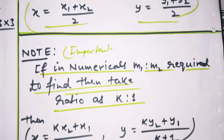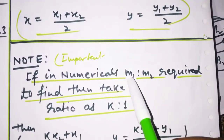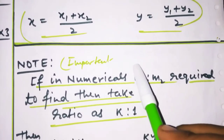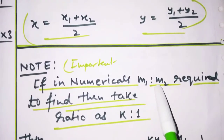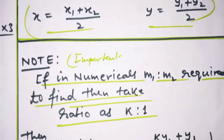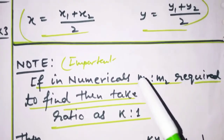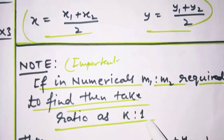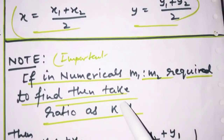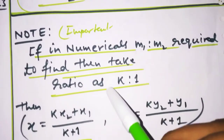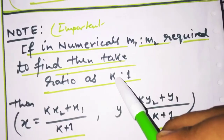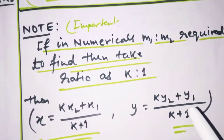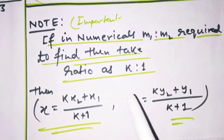Suppose kijiye question mein aapko ratio pata hi nahi hai, ratio nikalna hai. Aise questions jab aapke paas aayenge jisme ratio nikalna rahega aur baaki points aapko malum rahenge, to M1 ko aap K maan lenge, M2 ko 1 maan lenge. Aur ratio mein yeh value rakh ke put karte chalenge, K ki value find out karenge — maan lijiye 5 aa gaya, to 5 ratio 1 wahi aapki ratio value ho jayegi.